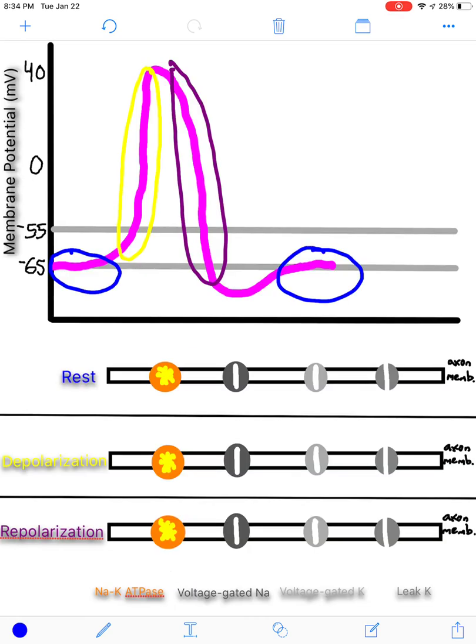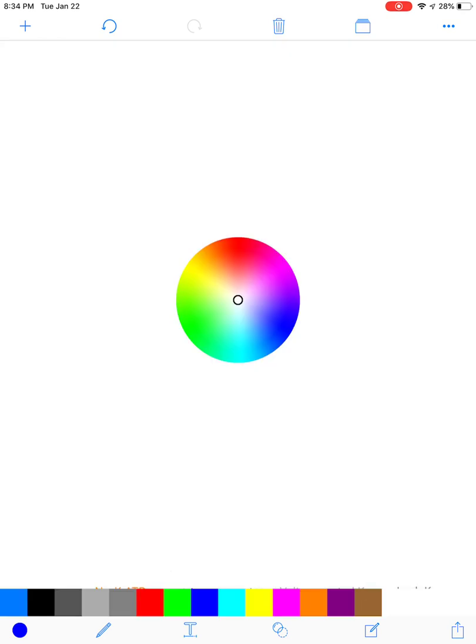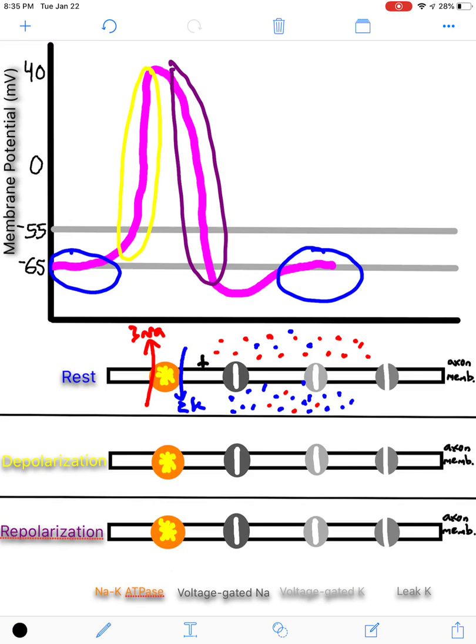Now, at rest, what you have going on is you have sodium-potassium pumps actively pumping in two potassiums while pumping out three sodiums. What this creates is a very strong gradient for sodium, such that you have the majority of sodium on the outside and a strong gradient for potassium, such that you have the majority of potassium on the inside. And the overall charge difference is going to be positive outside, negative on the inside.